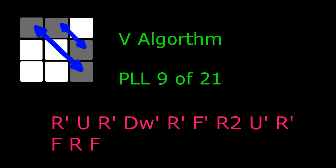So it's a kind of strange algorithm because that dw prime, it's just the bottom two slices go the same direction as a U.